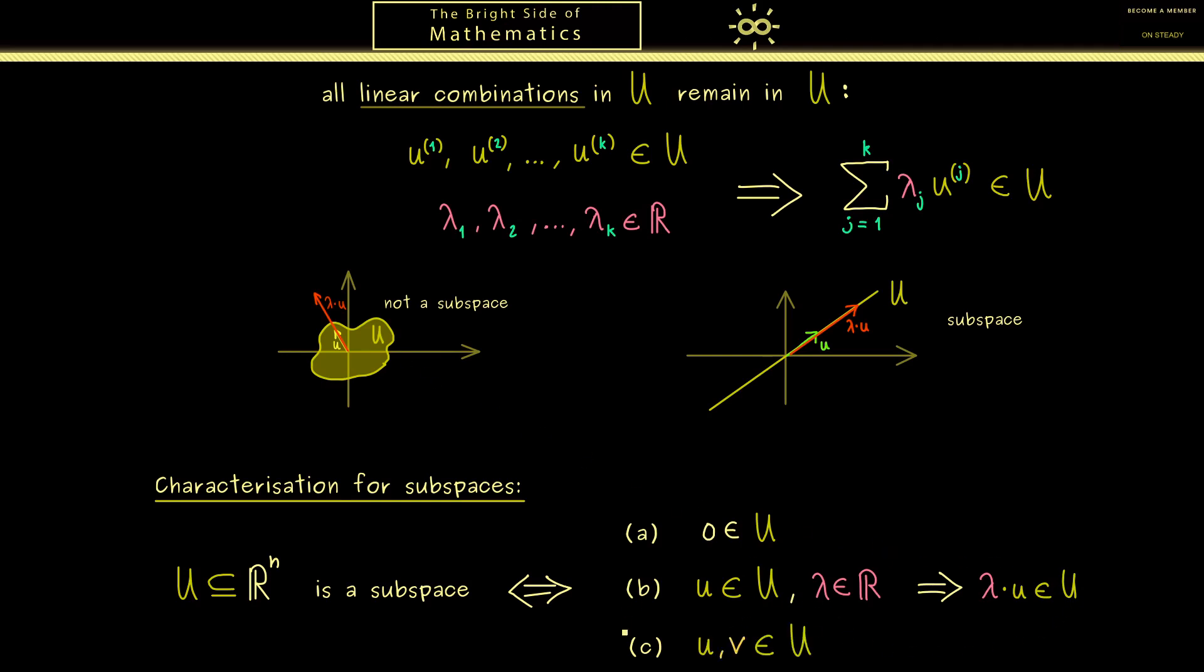Moreover then the next property, the third property, should explain that we cannot leave the subspace by adding vectors. Therefore we take two vectors u and v from the set U. And then the conclusion should be that u plus v is also an element in U.